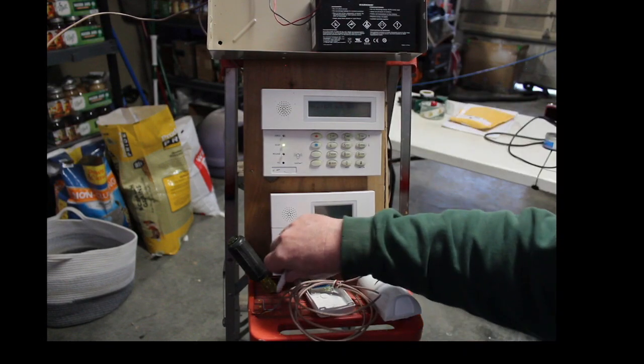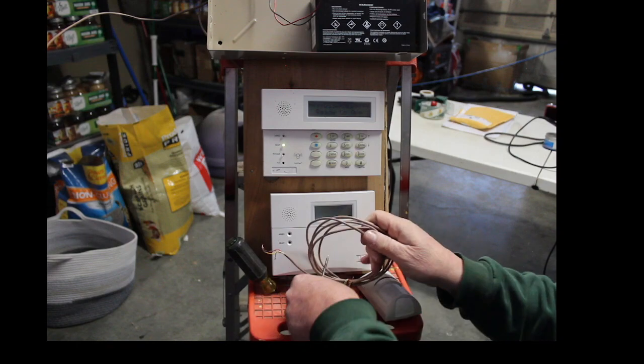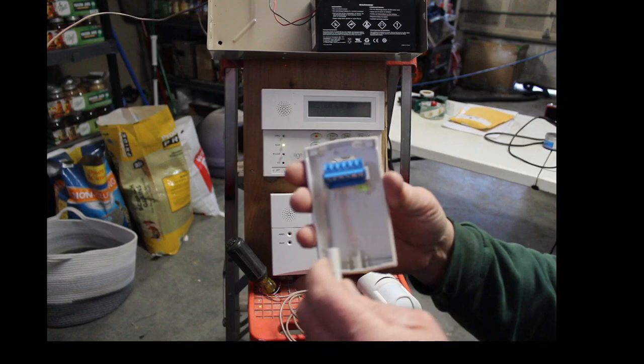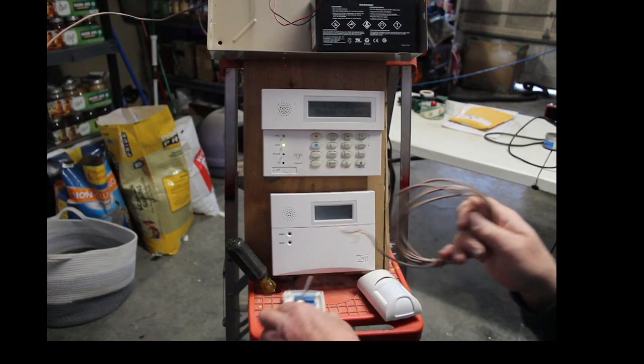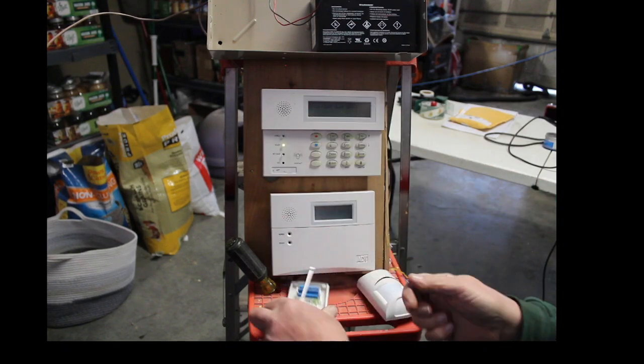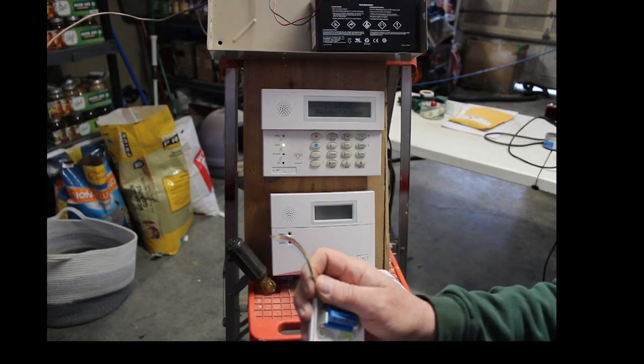You're going to have to get yourself a little tiny screwdriver to get into the terminal strip on your motion detector. So I'm going to open my wire up here, get this open. I had it all coiled up. So I got my four wires. I'm going to come in through the back of the motion detector.